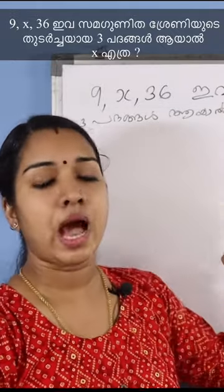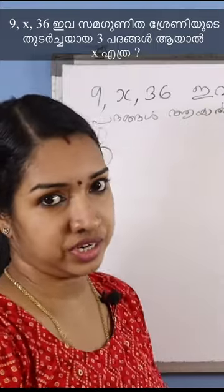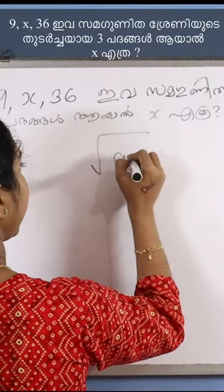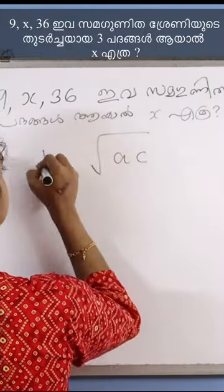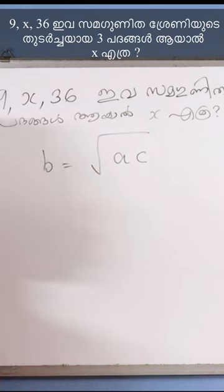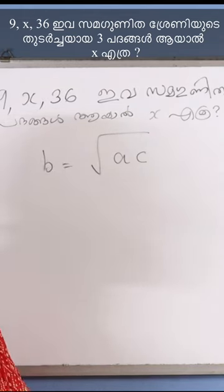What do we do with geometric progression? The answer is √(ac). That is the geometric progression formula.